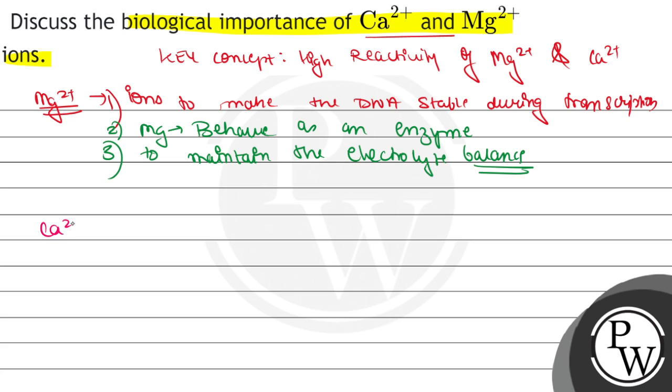Now for calcium 2+. Most of our body bones and teeth are made up of calcium 2+ ions.